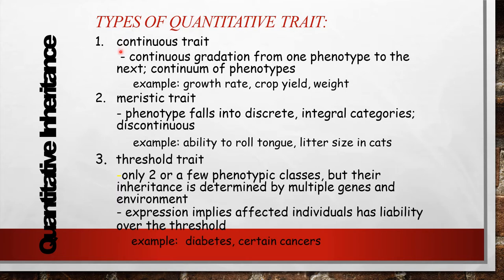There are types of quantitative traits. Continuous traits show continuous graduation from one phenotype to the next — a continuum of phenotypes. Examples include growth rate, crop yield, and weight. Meristic traits are those where the phenotype falls into discrete, integral or discontinuous categories. Threshold traits have only two or few phenotypic classes.